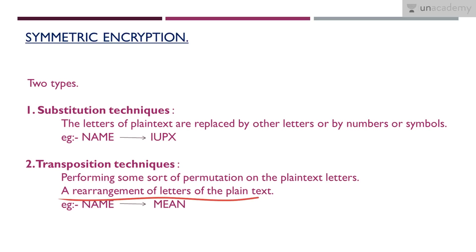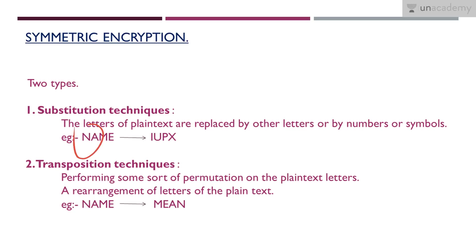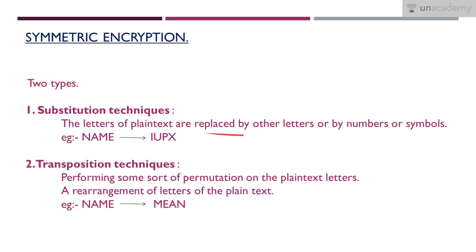So transposition is a rearrangement of the letters of the plain text. In substitution, the replacement element need not necessarily be a part of the plain text — it may or may not be. That is the key difference: in transposition we rearrange the letters of the plain text, whereas in substitution we replace each letter with some other element.